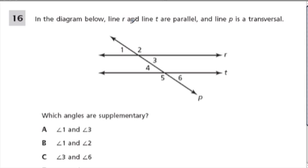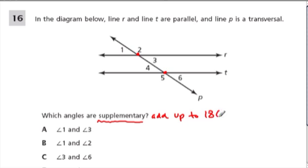In the diagram below, line R and line T are parallel. Line P is a transversal — it cuts these two parallel lines. Which angles are supplementary? Supplementary means that the angles add up to 180 degrees. So by looking at this, we want to know what angles add up to 180. They give us 1 and 3 as the first choice — here's 1, here's 3. Unless they're both right angles, it's not going to add up to 180, and it certainly doesn't look like that's the case. So A is out.